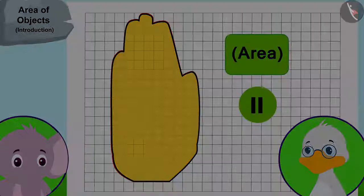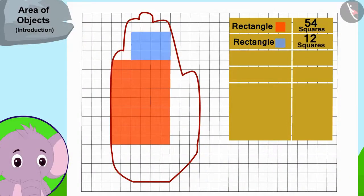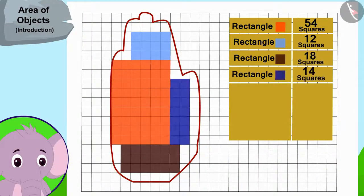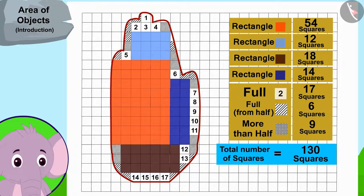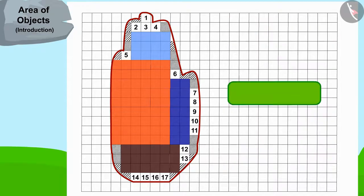You can also find the area of Appu's hand impression by making rectangles in this way. The area of Appu's hand impression is 130 square centimeters.